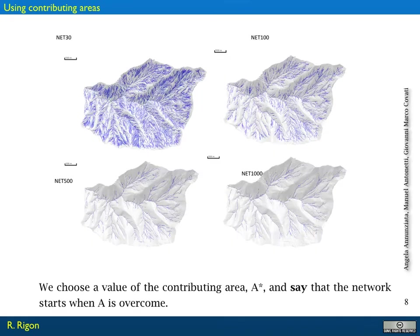In this case we choose 30, 100, 500, and 1000 pixels as area threshold. The network is changing a lot, especially between the first and second on top. The drainage on the top thresholds is too dense and not realistic as we are used to seeing rivers. Maybe you can see that the 500 and 1000 thresholds look more natural for river networks.